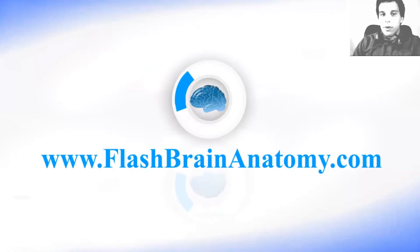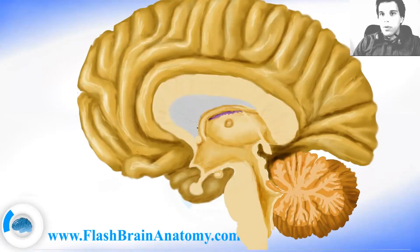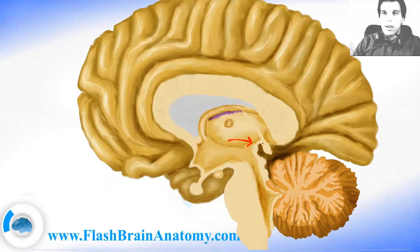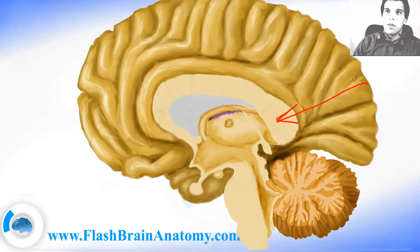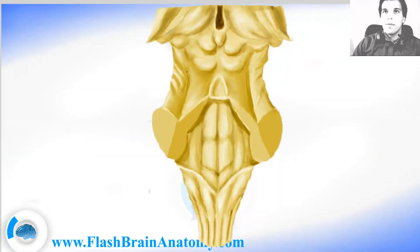Now I will explain it all very short and quick, just for overview. The first part of the diencephalon is the epithalamus, which is here on the back. It is made up by the pineal gland and the posterior commissure. If we make a cut here and look from this direction, we would see the pineal gland, and this space here was the third ventricle.